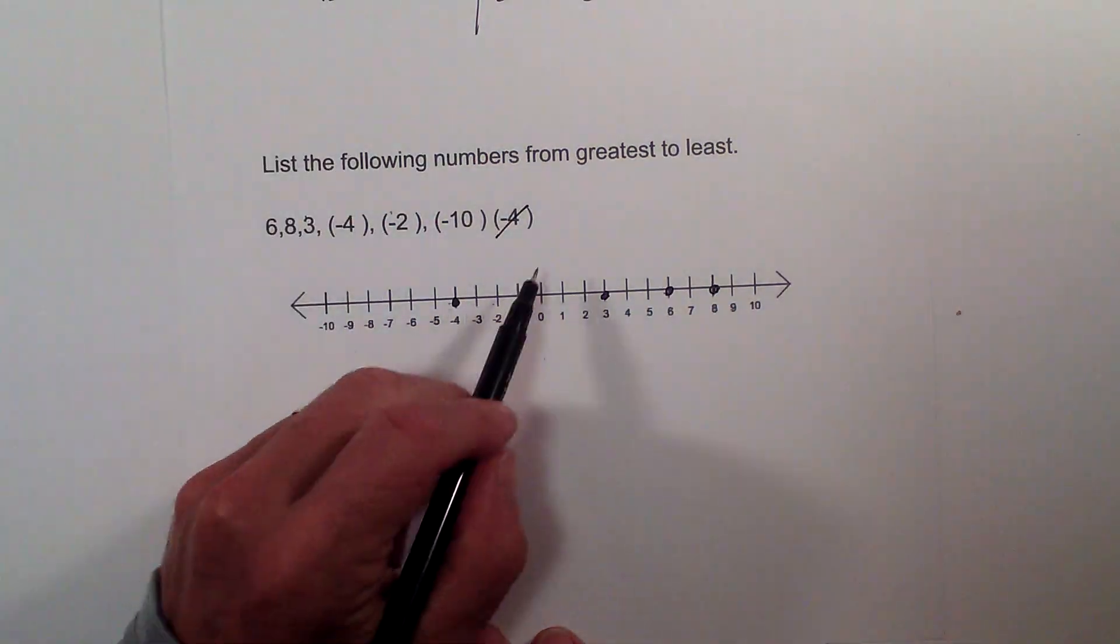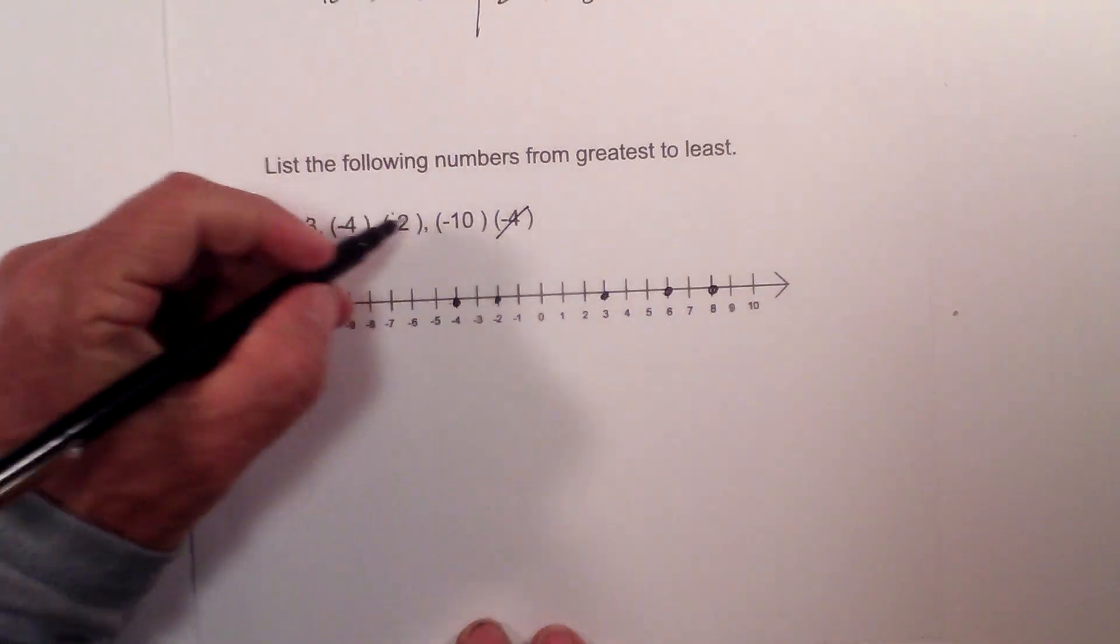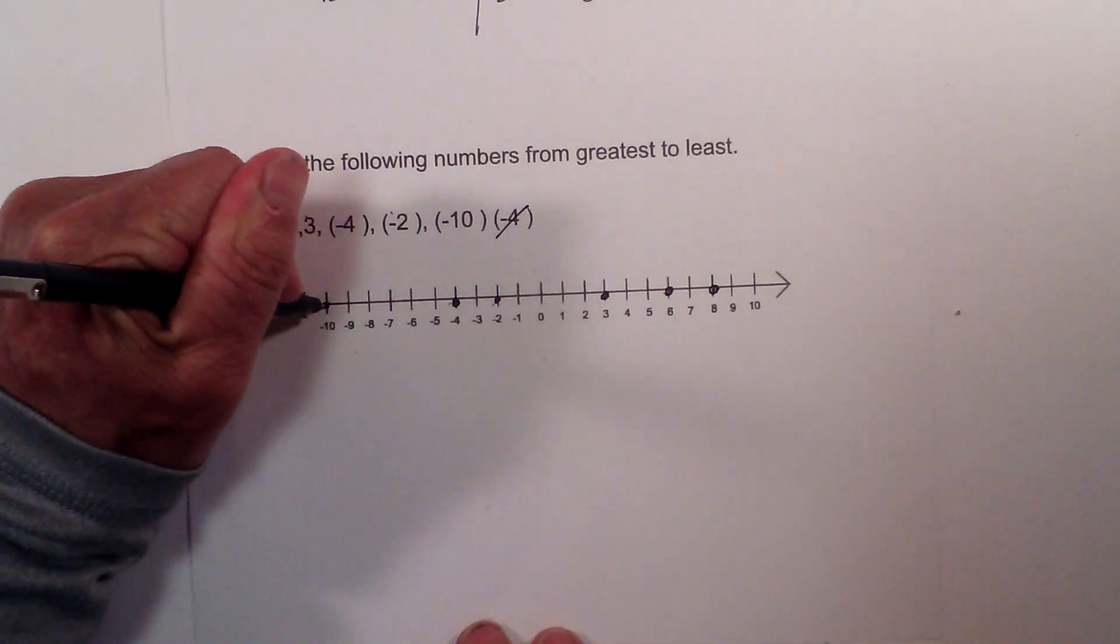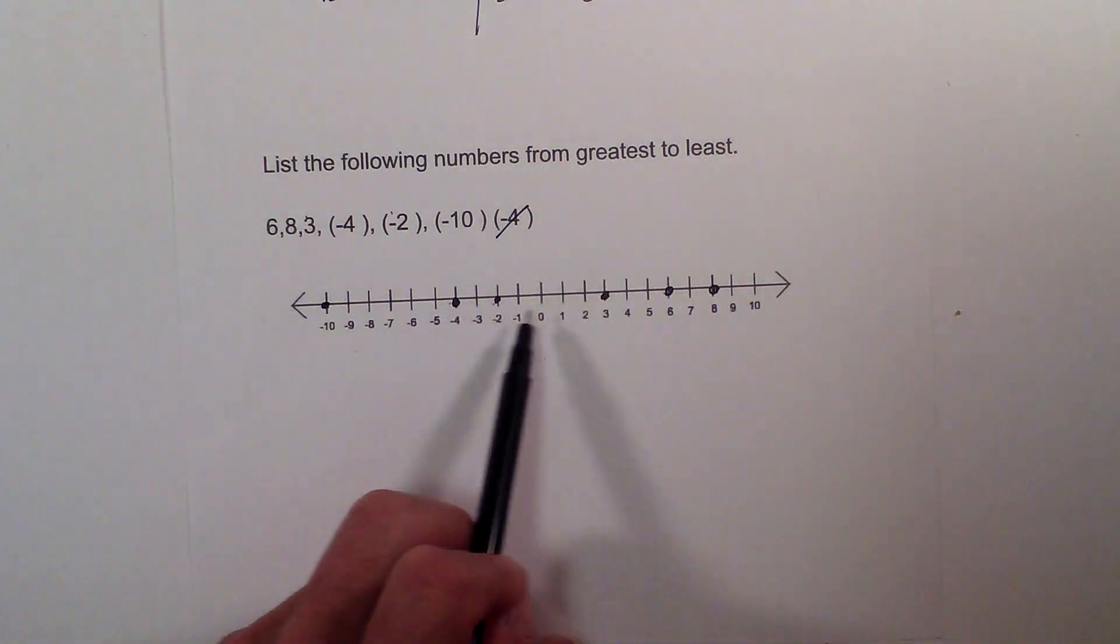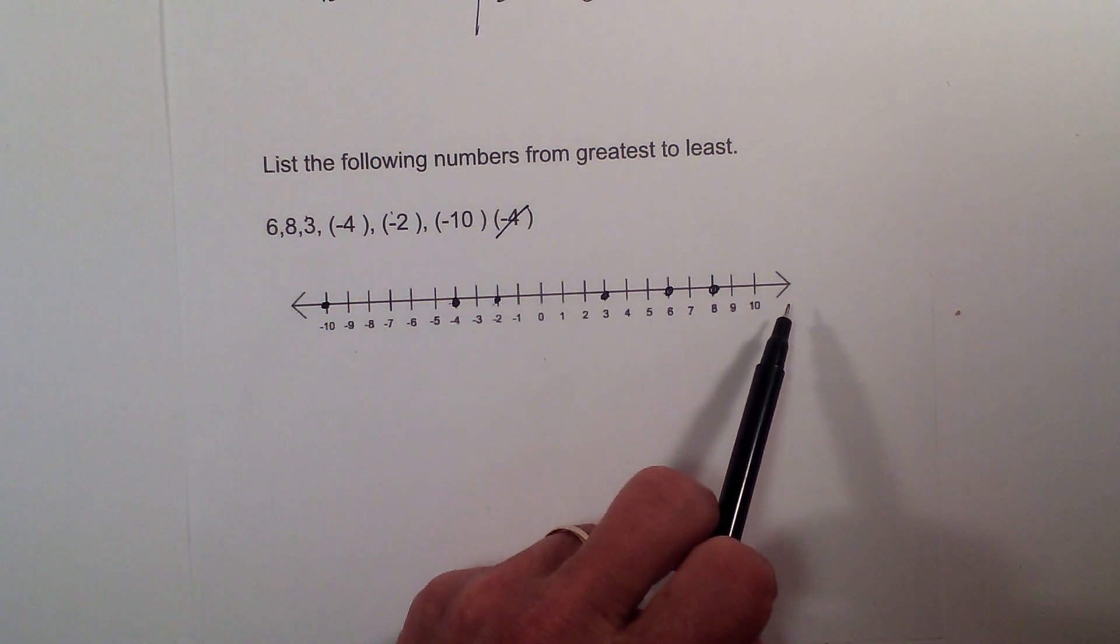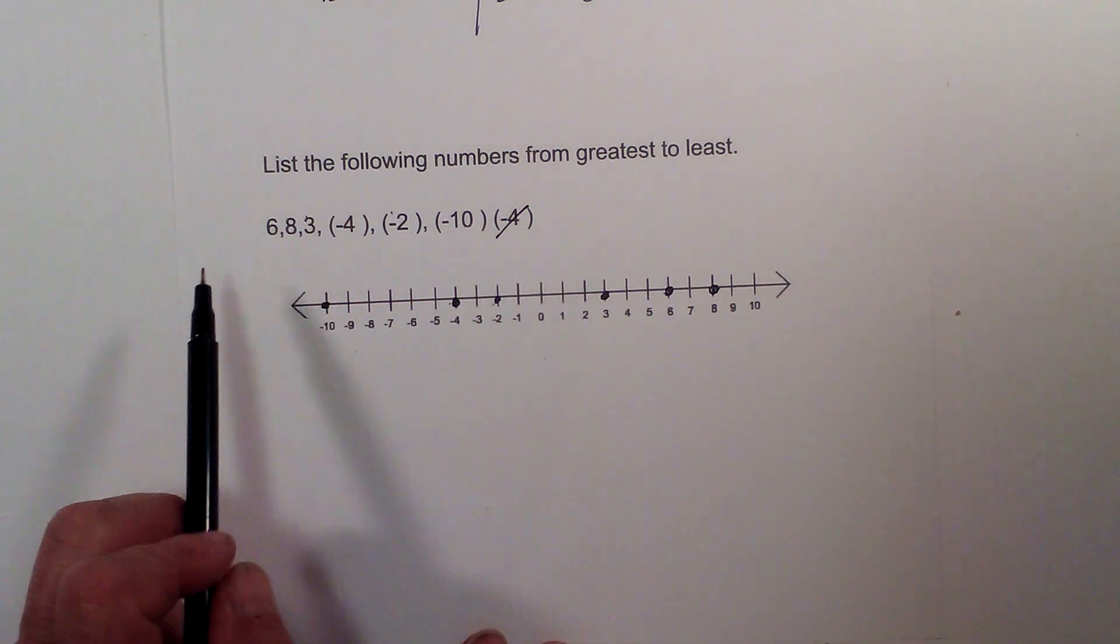And I actually have a negative 4 twice, so I'm going to mark that out. Then we have a negative 2 and a negative 10. So now I'm going from greatest to least. So I want to start on the far right of the number line, because the right is larger than the left.